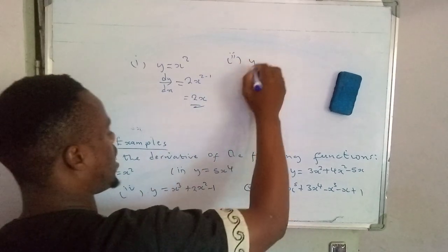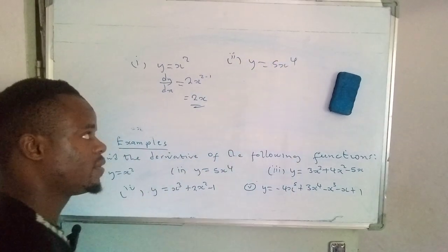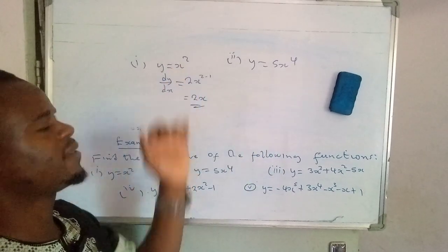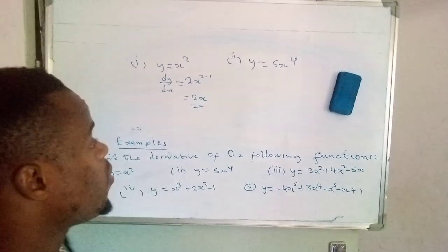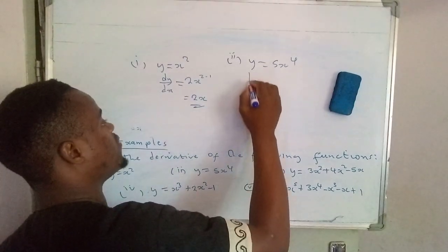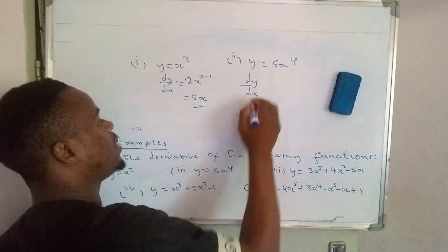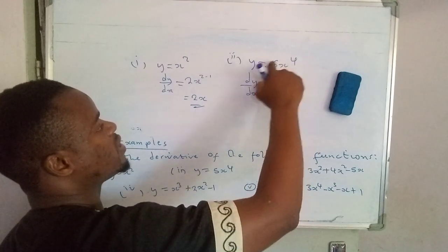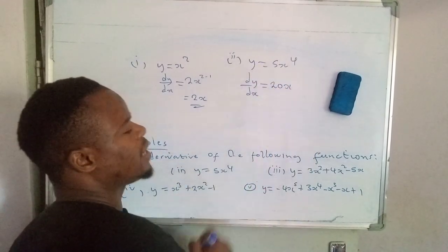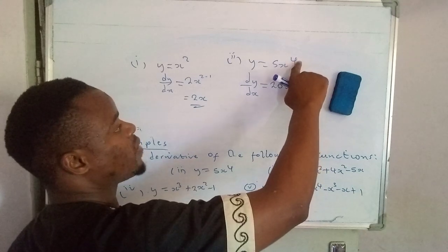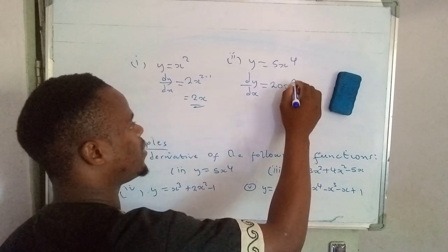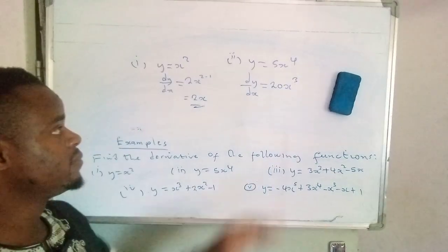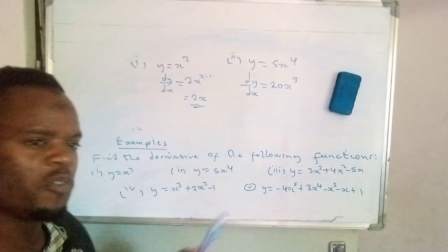Number 2: y = 5x⁴. This one is very much like the first one, so it's pretty simple. You show that you're differentiating by writing dy/dx. The 4 will drop and be multiplied by 5, giving 20x, then you subtract 1 from the index, so that will be 3. The derivative of that function is 20x³.